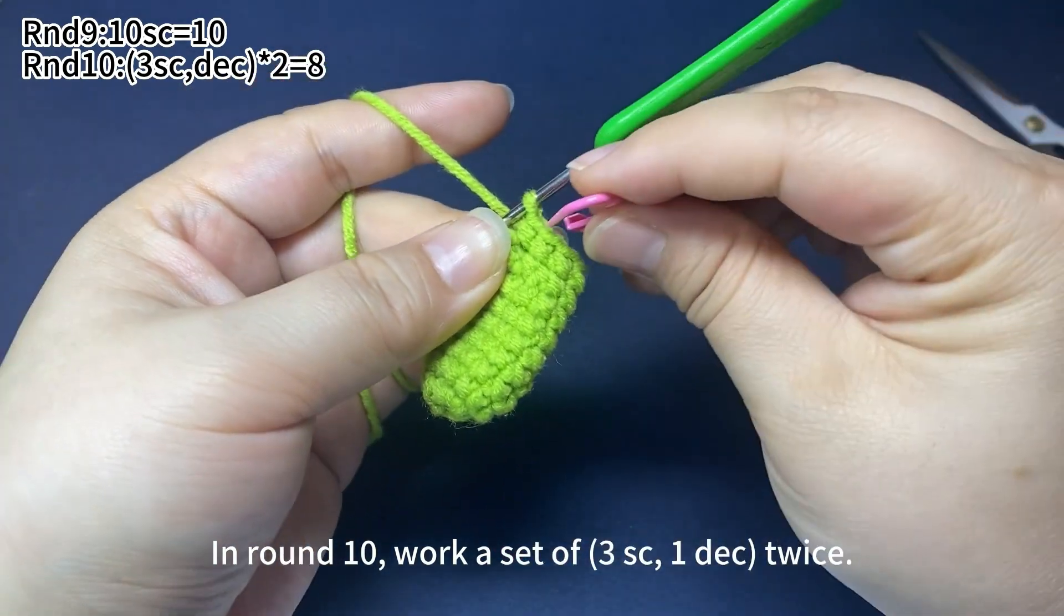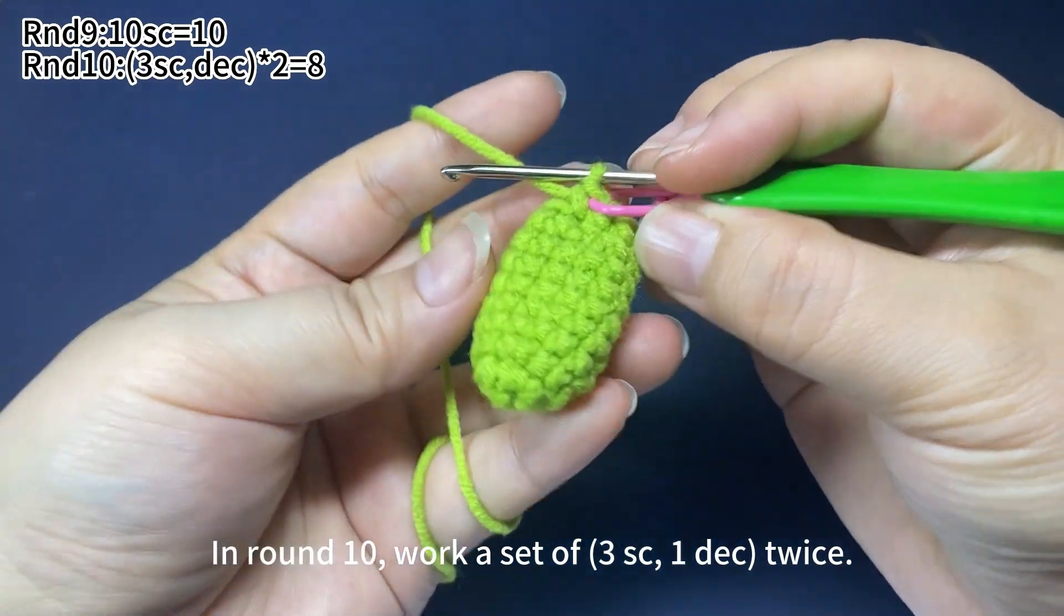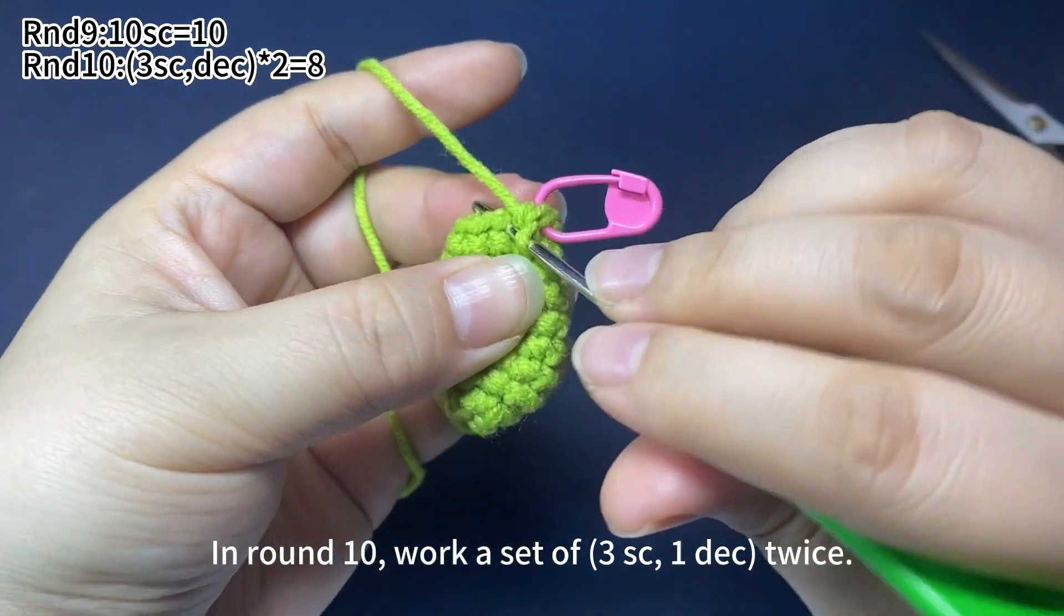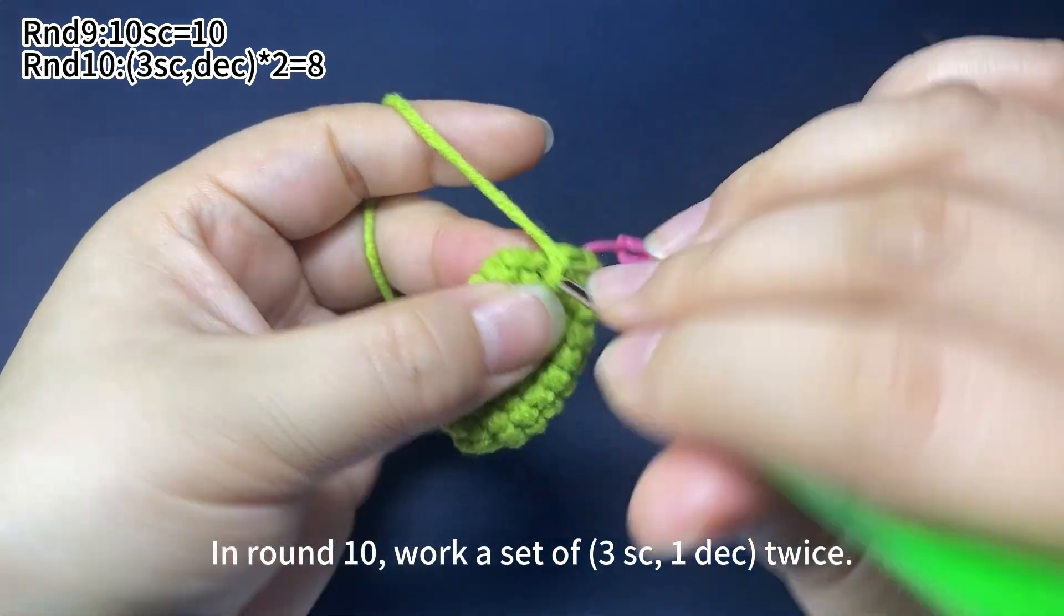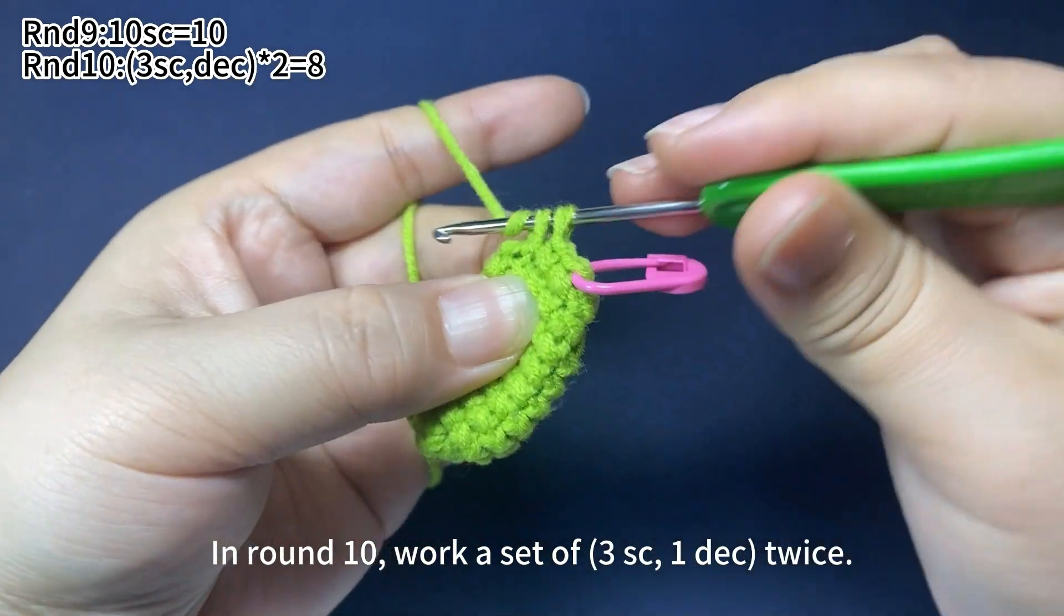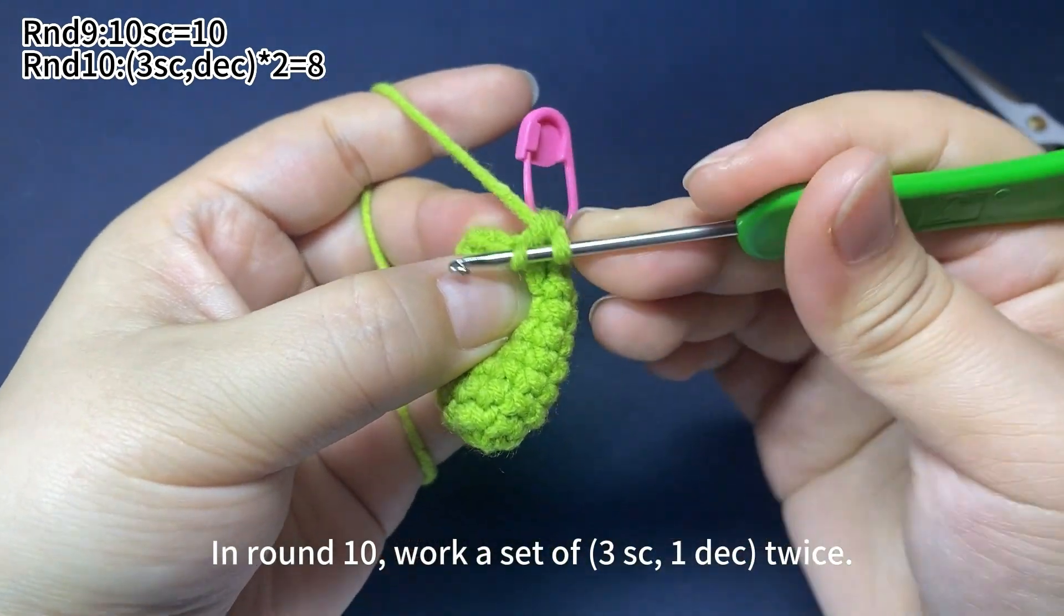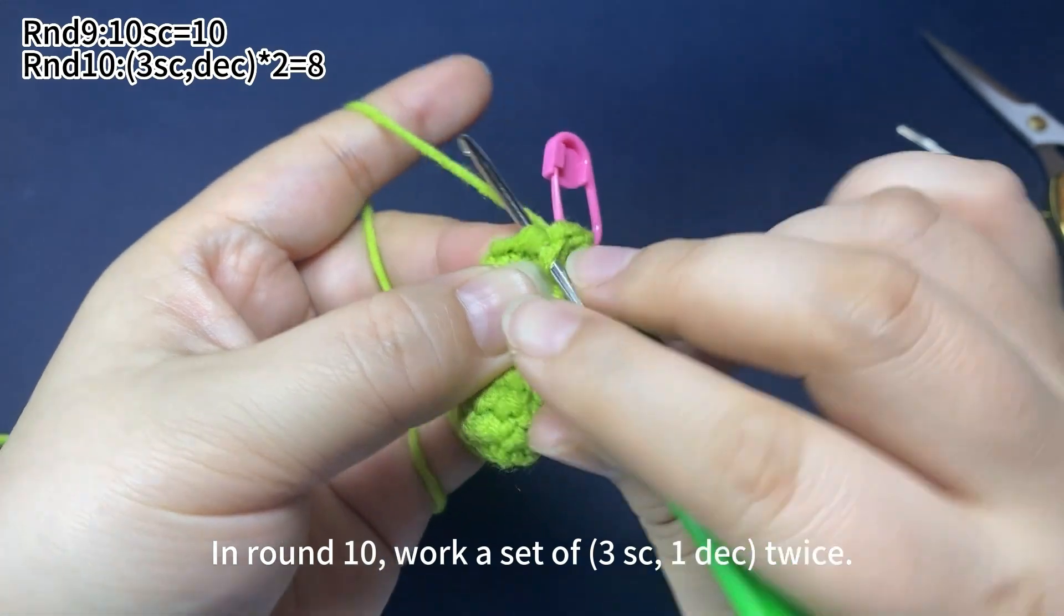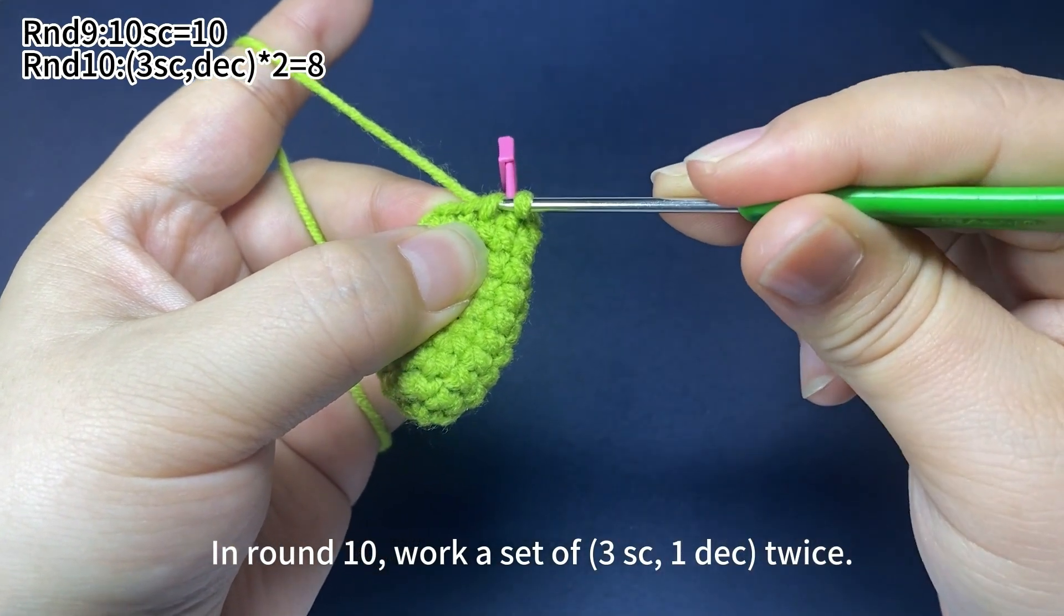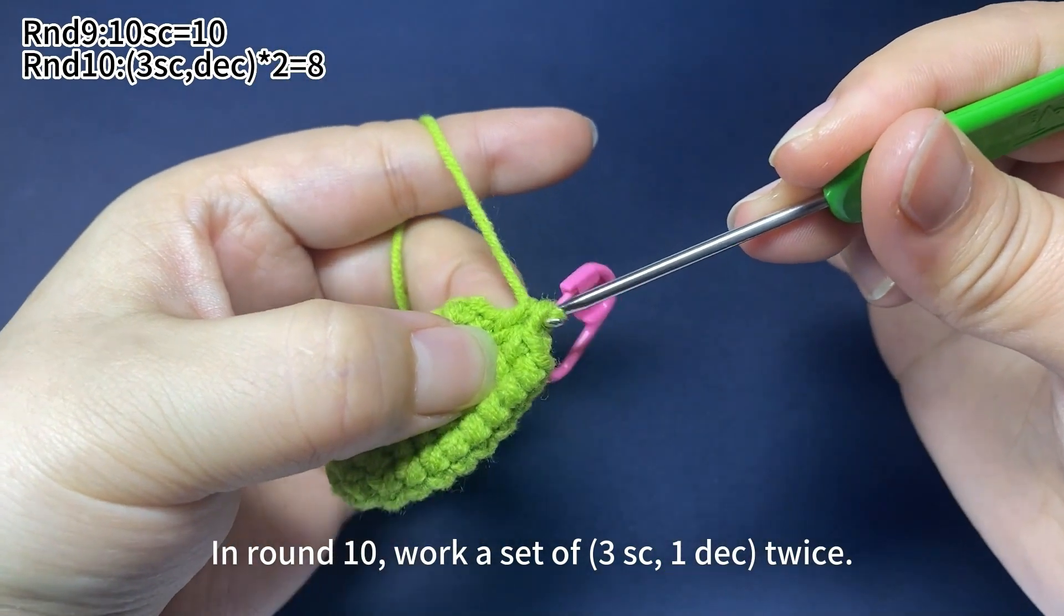Place a marker in the first stitch. Then work 2 more single crochets. Next, work 1 decrease. Through the front loop of 2 adjacent stitches, pull the yarn through the 2 front loops on hook. Yarn around hook, pull the yarn through both loops on hook.